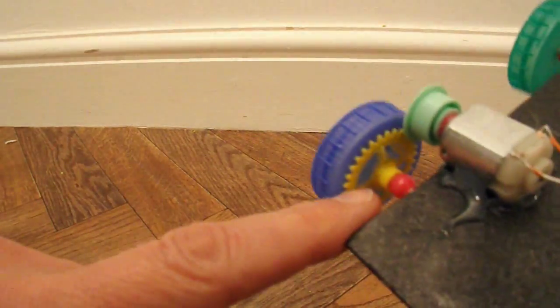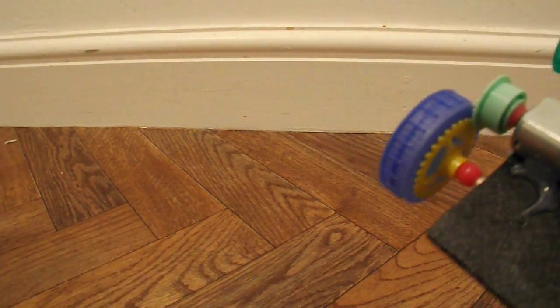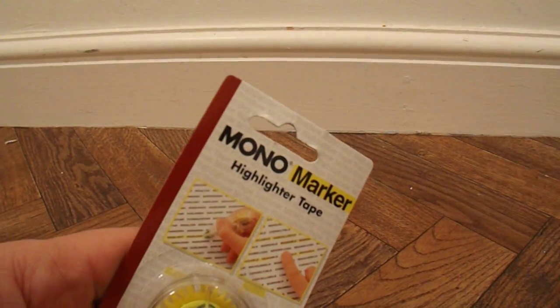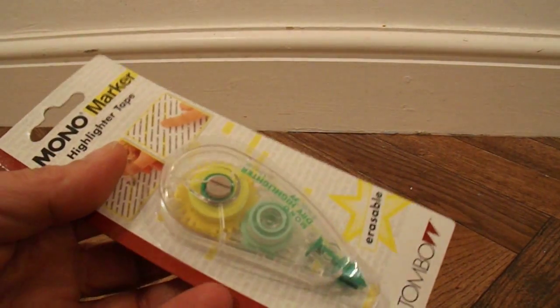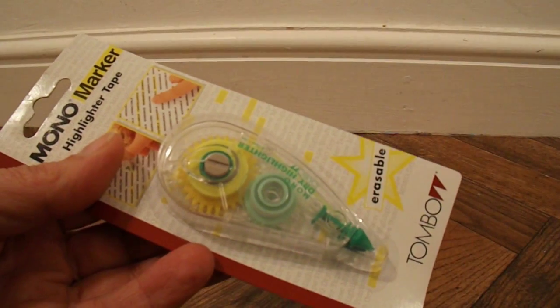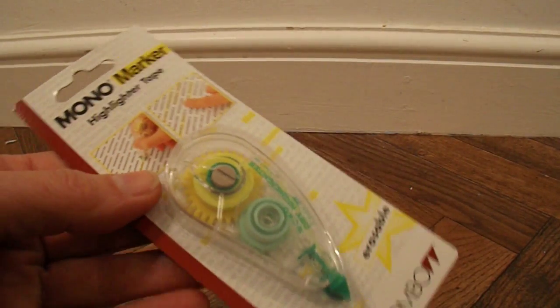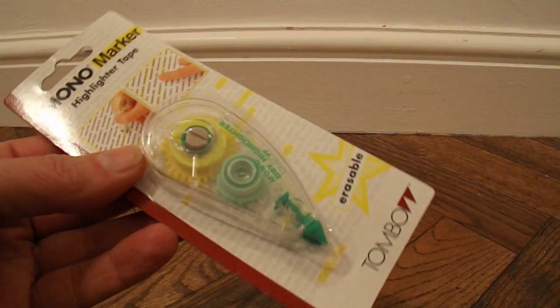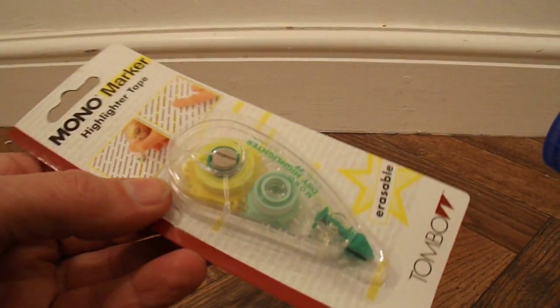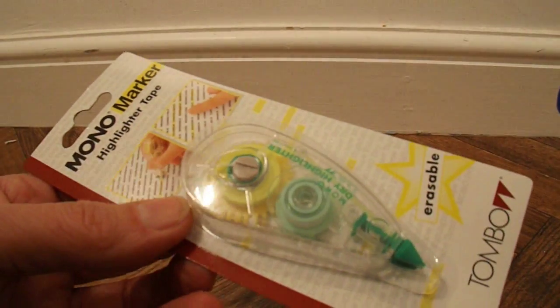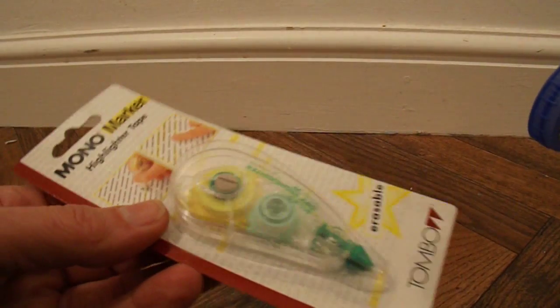Because these gear wheels came out of this mono marker highlighter tape, which I bought the other day in one of the bargain stores. It was actually only 37p, so I bought two of them. This is the second one which I haven't used, but I noticed they've got plastic gears in them and I thought they might be useful for a project, and that's what I've used them for.